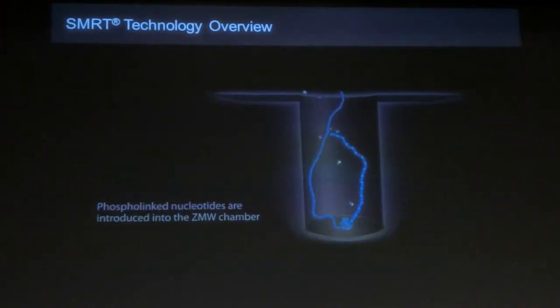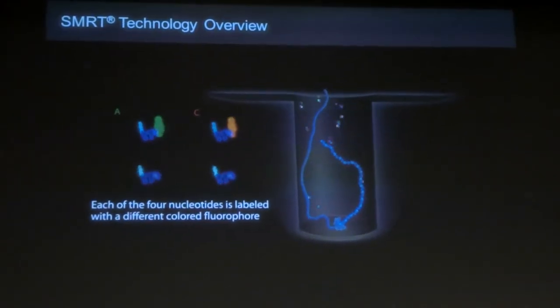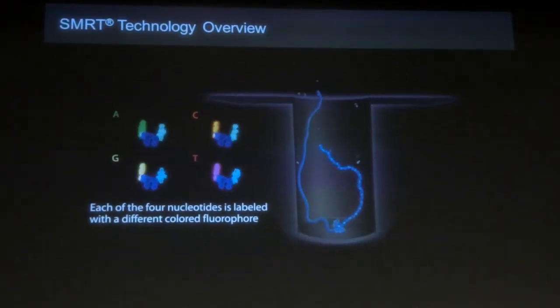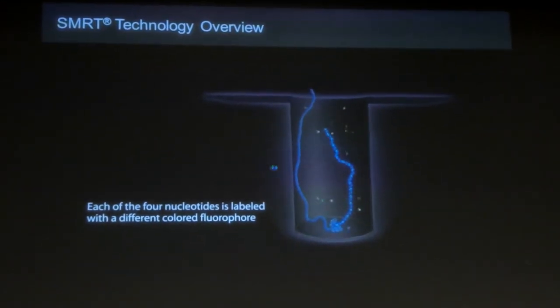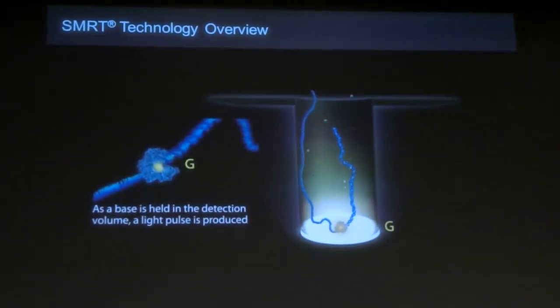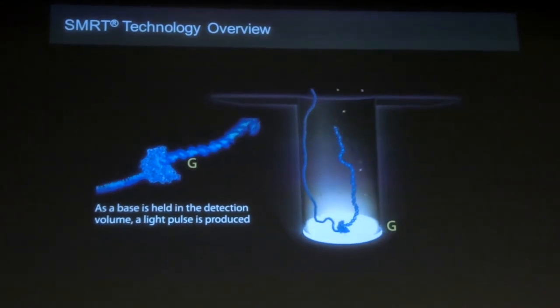And as the enzyme's going through a sequencing process, in suspension it's going to grab one of these nucleotides. And in the process of pulling it together and attaching it, it's going to hold that fluorophore close to the bottom in the detectable area for a longer period of time.